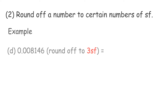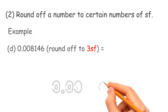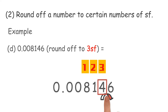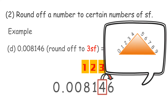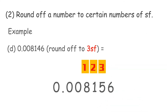Example D: round off 0.008146 to 3 significant figures. Count 1, 2, 3 — the digit to be rounded off is 4. Look at the right-hand side digit of 4. It is 6; since 6 is greater than 5, so add 1 to 4 and take out the 6. Therefore, the answer is 0.00815.